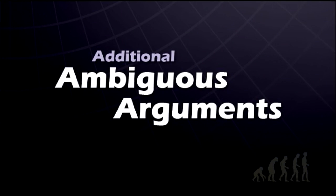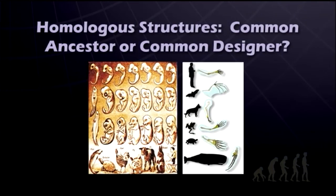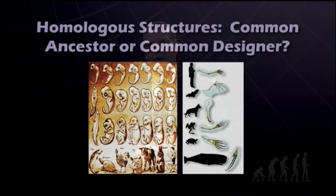Next, I'm going to talk about some additional ambiguous arguments often used by evolutionists: the idea of homologous structures. A homologous structure is a structure that is similar between humans and another type of animal, or between different kinds of animals. When a homologous structure is discussed, what's usually said is that since the bones in a human's arm might have some similarities with the legs of a dog or horse, those similarities indicate that all types of animals arose from a common ancestor, or that some kinds of animals turned into other kinds, because one would expect to see similarities if that had occurred.